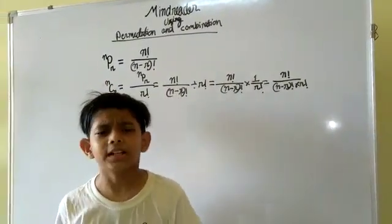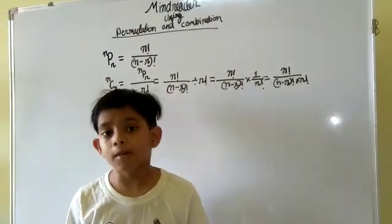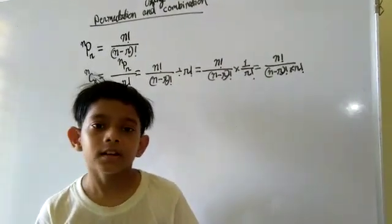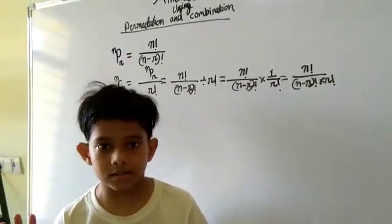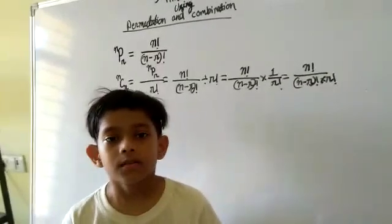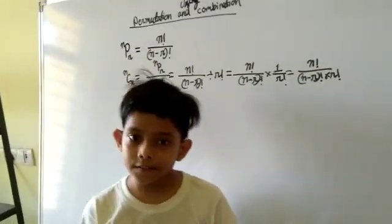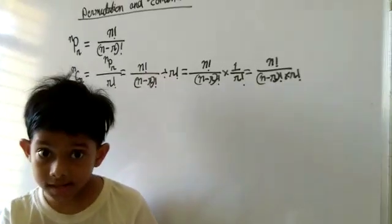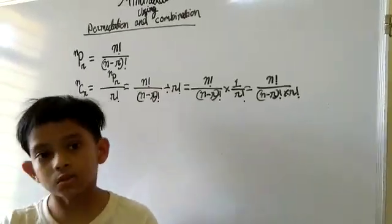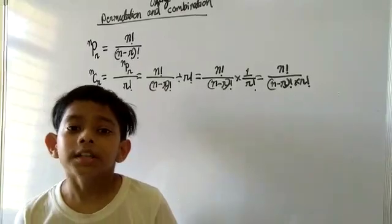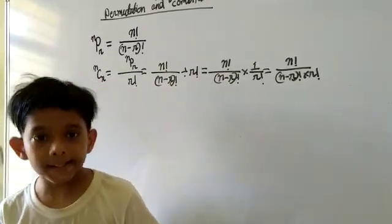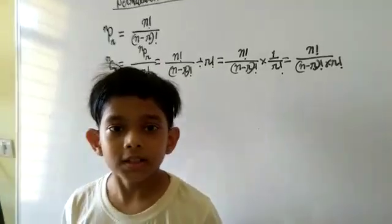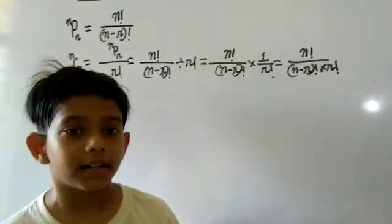Let's assume that we have a total number of 6 cards and we select 4 cards. We will evaluate the game using 4 selected cards out of 6 total cards. Here n equals 6 and r equals 4. So let's start.